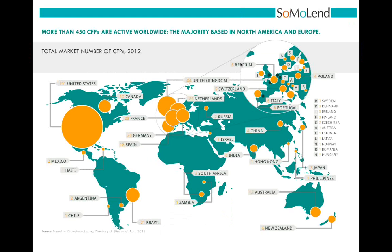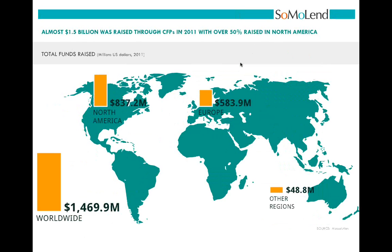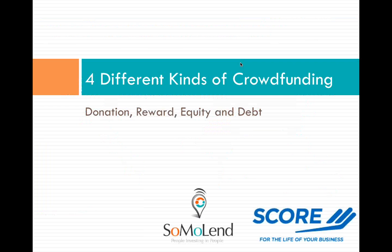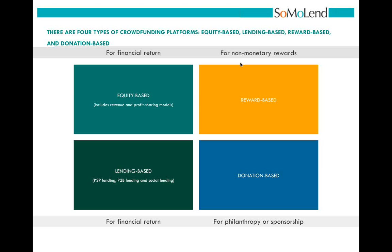Crowdfunding has been a growing industry. There are actually 530 crowdfunding platforms as of July of last year across the globe, primarily located in the United States. What's more important is that $1.5 billion was raised in 2011 alone in donation and reward-based crowdfunding campaigns, and $837 million of that was raised right here in the U.S. It's important to first understand that there are four different kinds of crowdfunding.